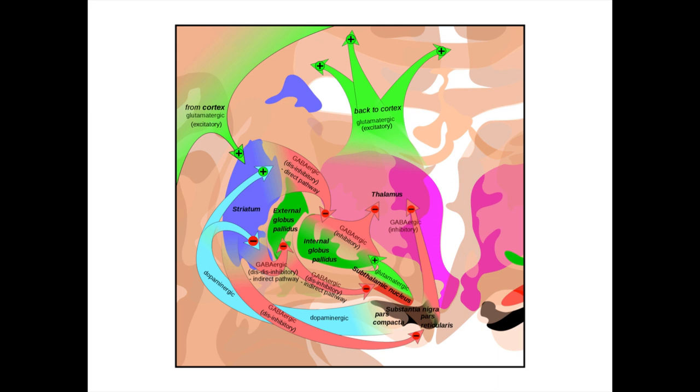Recall that the basal ganglia are a group of subcortical structures that help to refine movements traveling from the motor cortex down to the muscles.